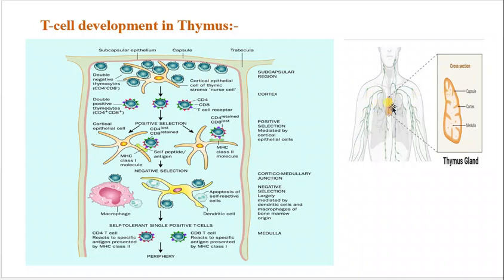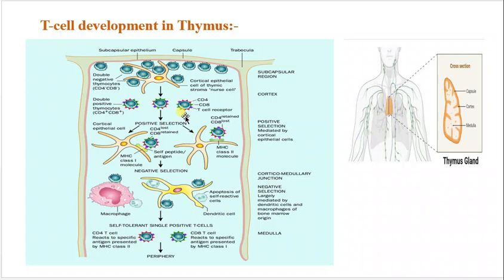The thymus is present in our thoracic cavity. In cross-section, there is a capsular region, a cortex, and a medulla. In the hypothetical diagram of the thymus, when the precursor T-cell arrives, it enters the subcapsular region. This precursor T-cell interacts with cortical epithelial cells, also called thymic stromal cells. When it interacts with the thymic stromal cells, the precursor T-cell becomes double positive — expressing both CD4 and CD8 receptors.